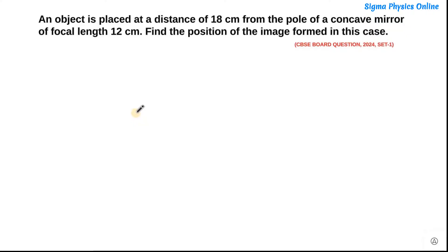Hello students, welcome back. Let's see what the next question is. The next question says an object is placed at a distance of 18 cm from the pole of a concave mirror of focal length 12 cm. Find the position of the image formed in this case.